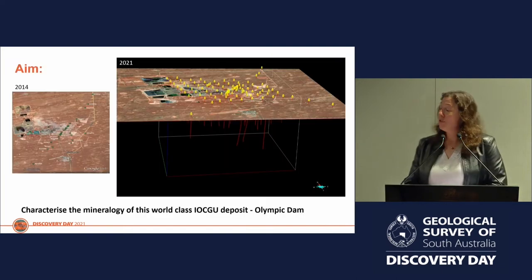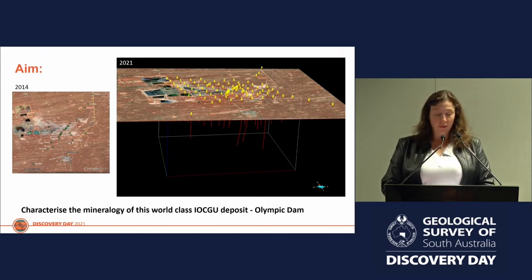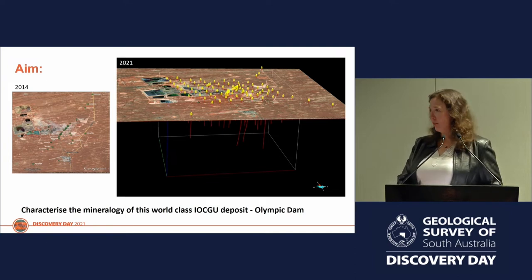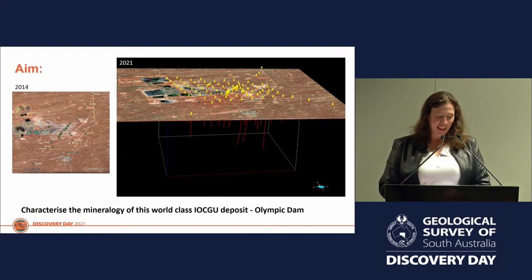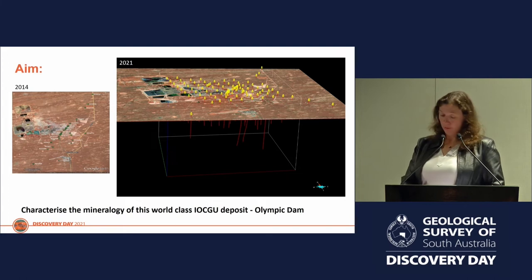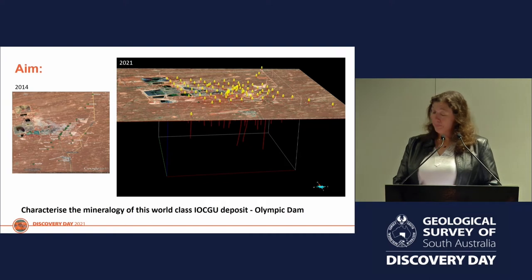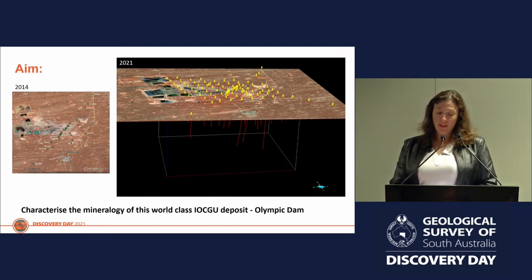We've taken the original 14-kilometre transect of this world-class IOCG deposit — approximately 27 cores and 30 drill holes — and expanded it. Bigger is better, right? The original idea was simple: to characterise the alteration mineralogy of the Olympic Dam Breccia Complex and the surrounding region to get a better handle on vectors towards ore and for mineral systems across the domain.